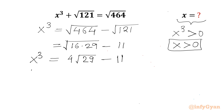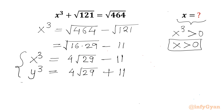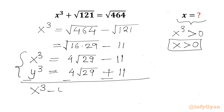Now we can write y³ as well, which will be equal to 4√29 + 11. Now we have two equations. Let us subtract the second one from the first one — sign change will be there — so x³ − y³ = −22. Let us call this equation number 1.